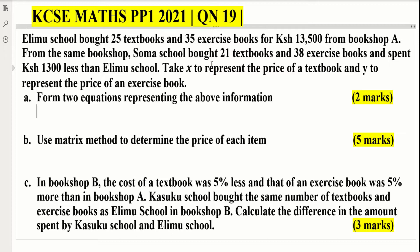Part three: In Bookshop B, the cost of a textbook was 5% less and that of an exercise book was 5% more than in Bookshop A. Kasuku School bought the same number of textbooks and exercise books as Elamu School in Bookshop B. Calculate the difference in the amount spent by Kasuku School and Elamu School.